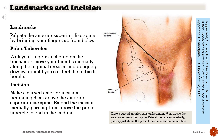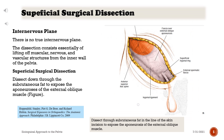Superficial surgical dissection: There is no true internervous plane. The dissection consists of lifting off muscular, nervous, and vascular structures from the inner wall of the pelvis. Dissect down through the subcutaneous fat to expose the aponeurosis of the external oblique muscle.